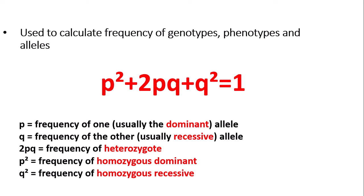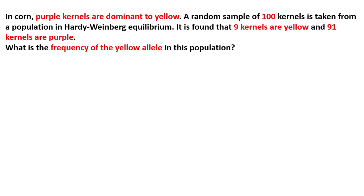This equation is used to calculate the frequency of a genotype, phenotype, or specific allele within a population. Here is the first example: in corn, purple kernels are dominant to yellow. A random sample of 100 kernels is taken from a population in Hardy-Weinberg equilibrium. It is found that 9 kernels are yellow and 91 kernels are purple. What is the frequency of the yellow allele in this population? The yellow allele is the recessive allele, as purple is dominant to yellow.